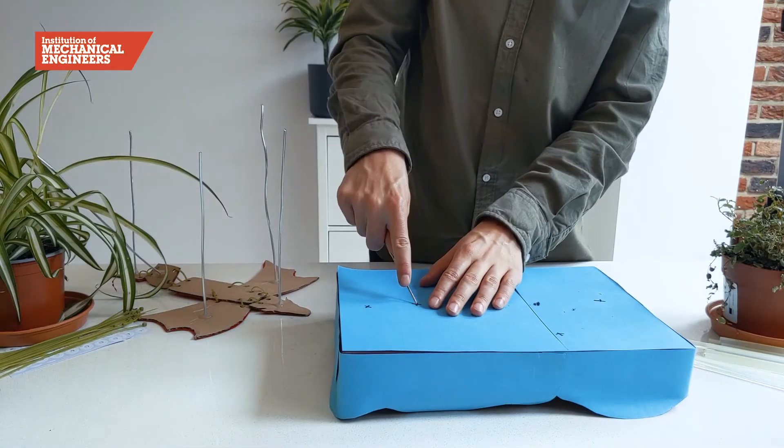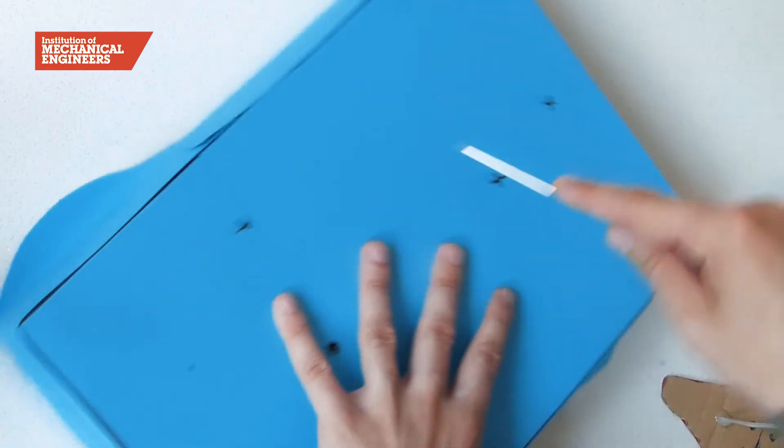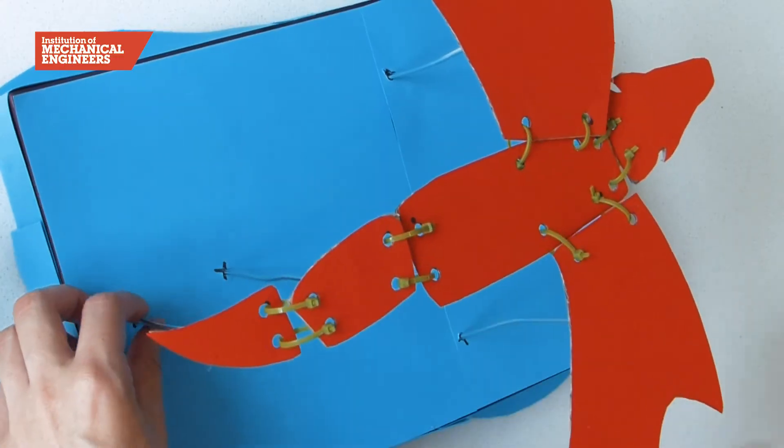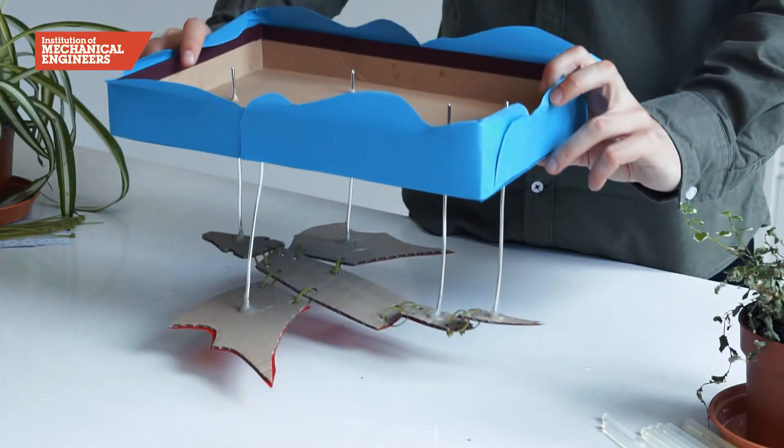Now we're going to make holes on the lid in line with the rods on your dragon. Poke the rods through and fix them in place with blue tack.